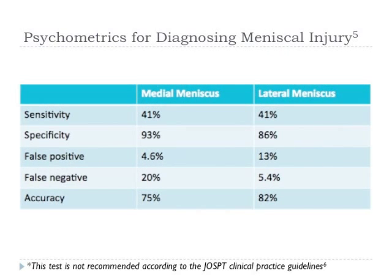The psychometrics of the Apley tests are presented in the chart. The test is shown to be 41% sensitive for identifying both medial and lateral meniscal injuries. It is 93% and 86% specific for identifying medial and lateral meniscal injury respectively. However, this test is not recommended according to the Journal of Orthopaedic and Sports Physical Therapy Clinical Practice Guidelines.